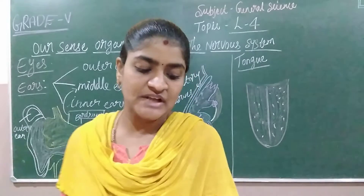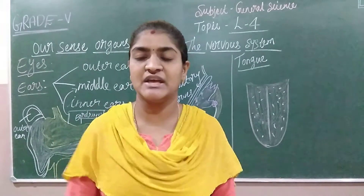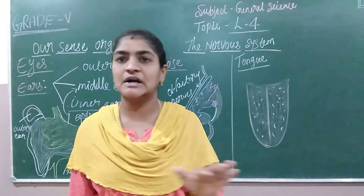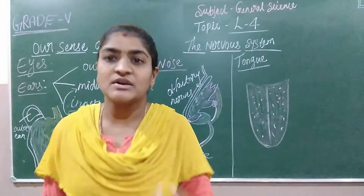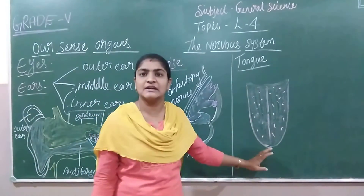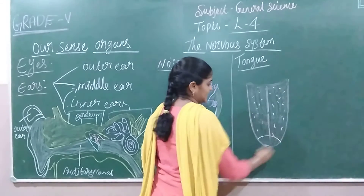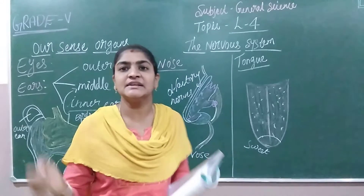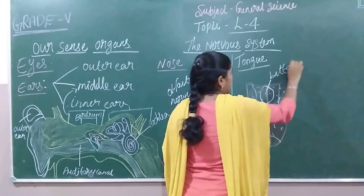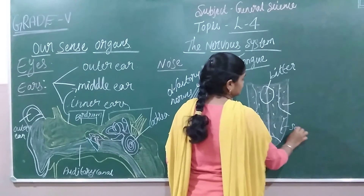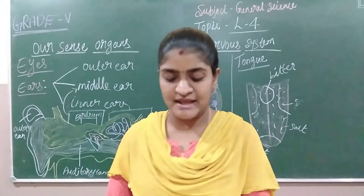We taste with our tongue. The surface of the tongue has many taste buds. We have different types of taste buds — bitter, salty, sweet, and spicy. Each part of the tongue can recognize a different taste. For example, the tip of the tongue can feel sweet. Different parts of the tongue detect different tastes.